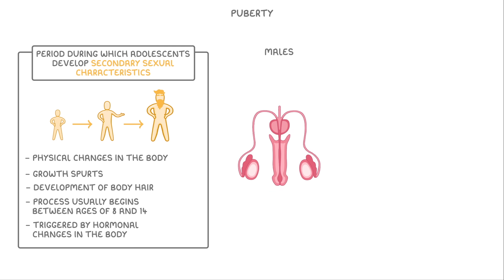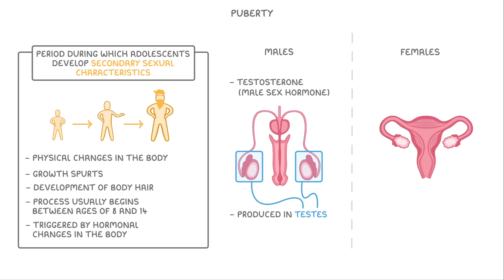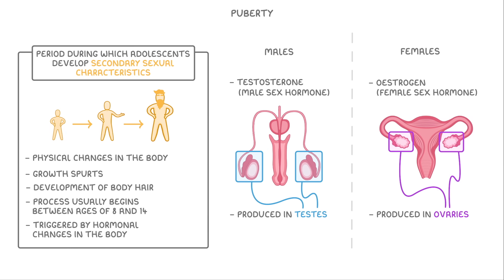In males, this hormone is testosterone, which is the male sex hormone and is produced in the testes. In females, puberty is triggered by estrogen, which is the female sex hormone and is produced in the ovaries. In addition to the physical changes, these hormones also trigger sperm production in males and the menstrual cycle in females.